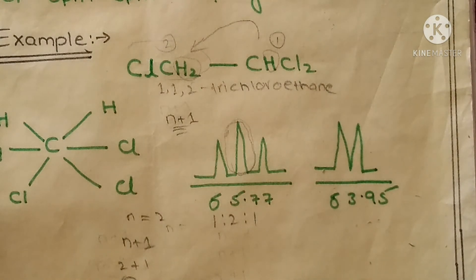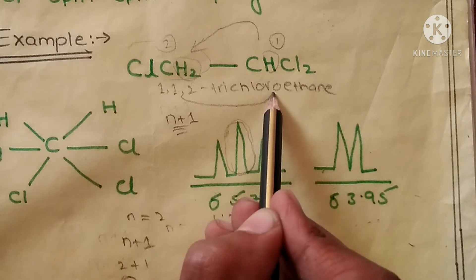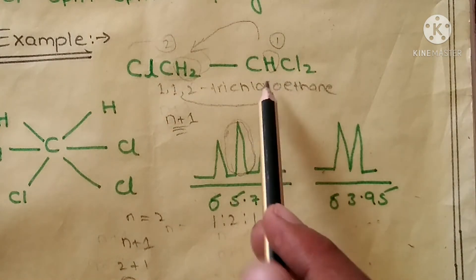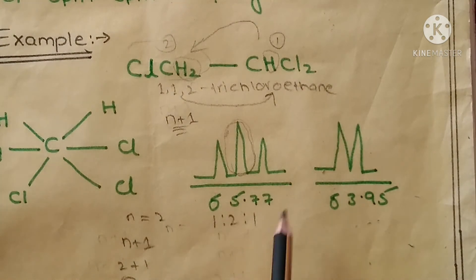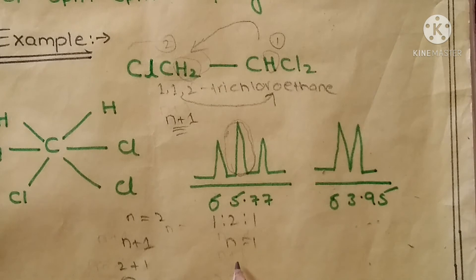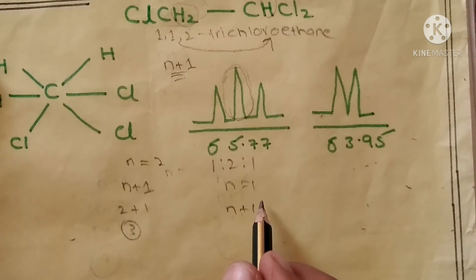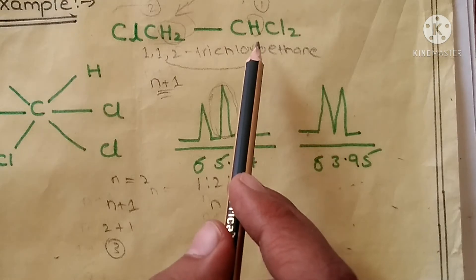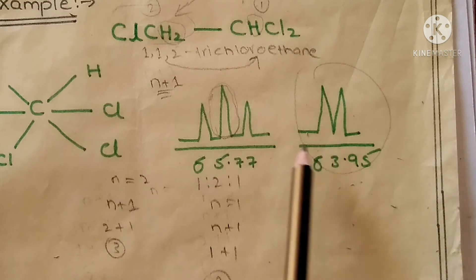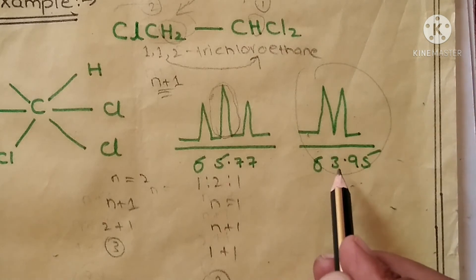And on the other side, when we talk about this set of protons, then this set of protons influences the neighboring set of protons. So n is equal to 1, because here one proton is present. When we put n equal to 1 into the n+1 formula, then we get 1+1 equal to 2. So this compound has 2 peaks, and the chemical shift value is 3.95.